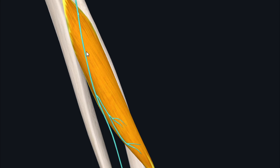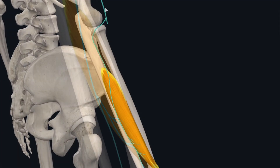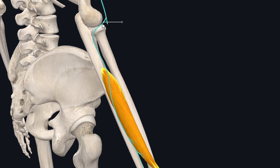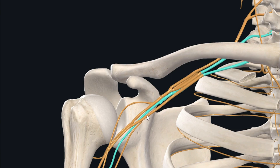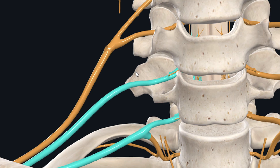The abductor pollicis longus muscle receives its innervation from the deep branch of the radial nerve, just like the other posterior muscles of the forearm. The radial nerve gives off the deep branch of the radial nerve, which supplies almost all the posterior muscles of the forearm. The radial nerve itself arises from the posterior cord of the brachial plexus, and the nerve roots involved in supplying this muscle are the anterior rami of the 7th and 8th cervical spinal nerves.